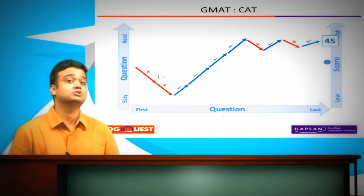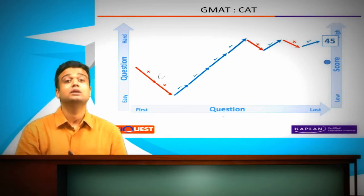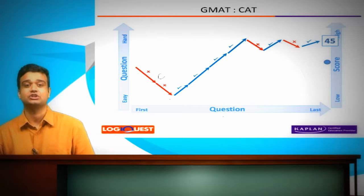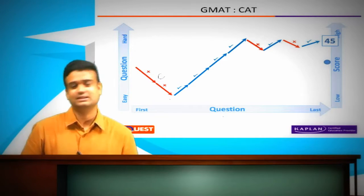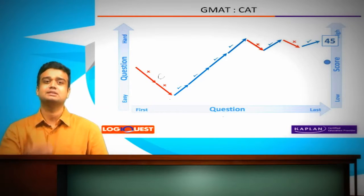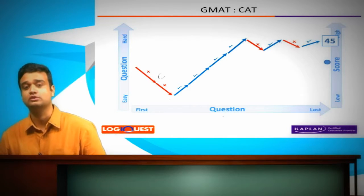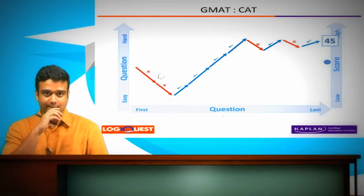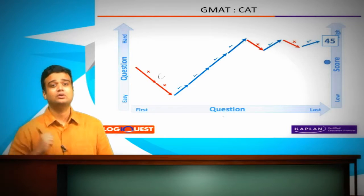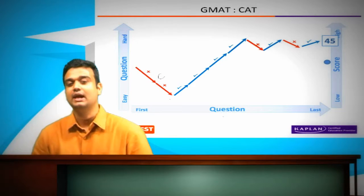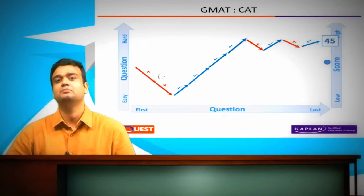Then you get that question wrong as well. Now the system knows that probably you're not capable of getting that question or getting a question right in that ability level either. So it gives you a slightly less difficult question. And as a result, your average score also goes down. And then for some reason, maybe the first two questions you zoned out or you were not focused.